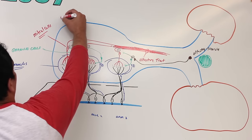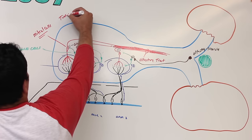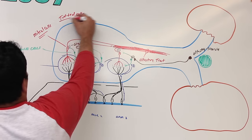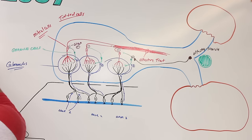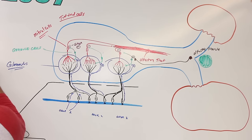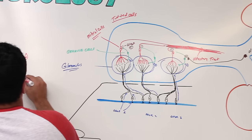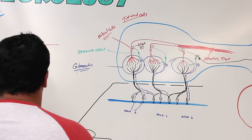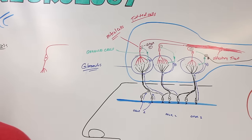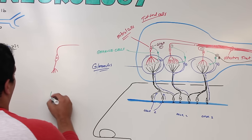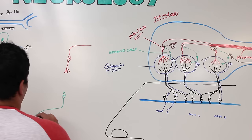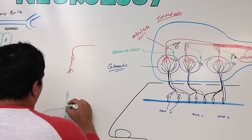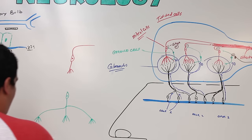There are other cells in the olfactory bulb called tufted cells. The difference between tufted cells and mitral cells is that for a mitral cell, its extensions are going to only one glomerulus. A tufted cell, by comparison, has its extensions going to many, many different types of glomeruli.